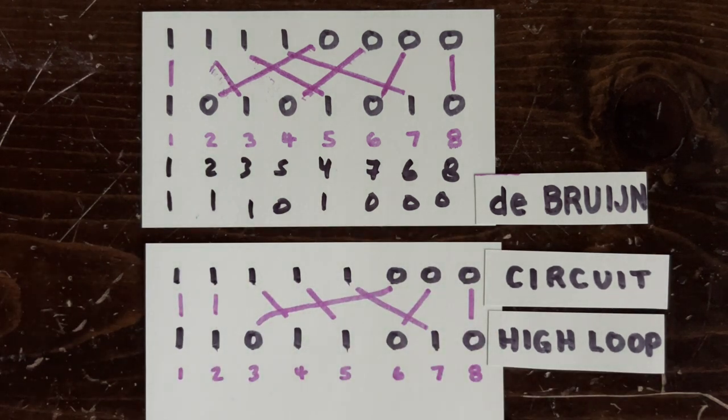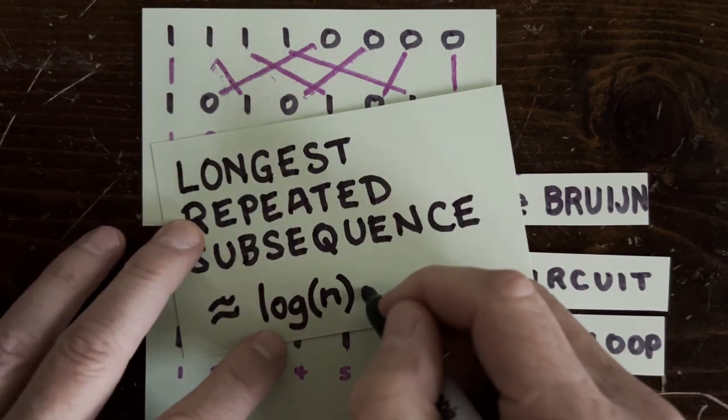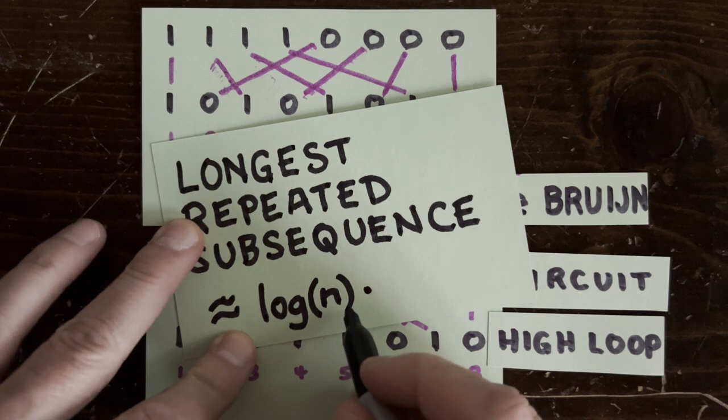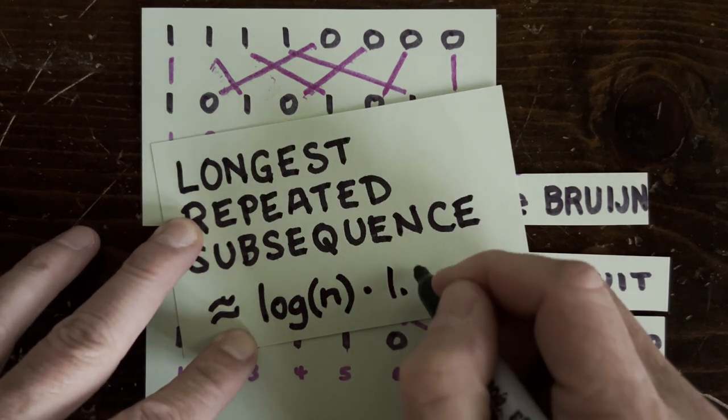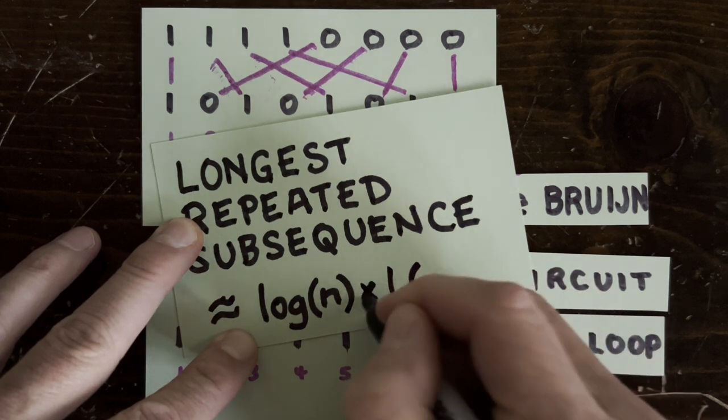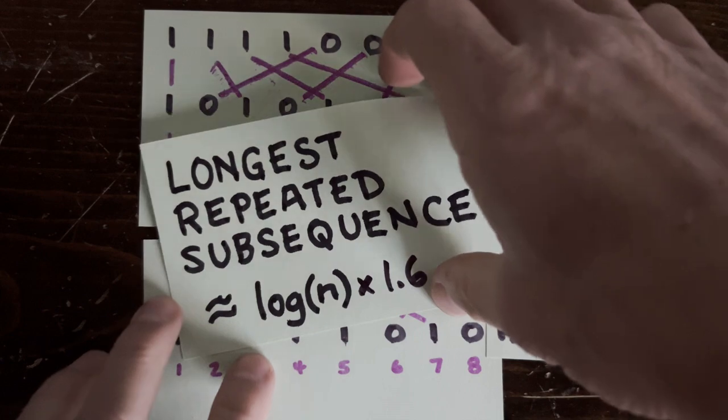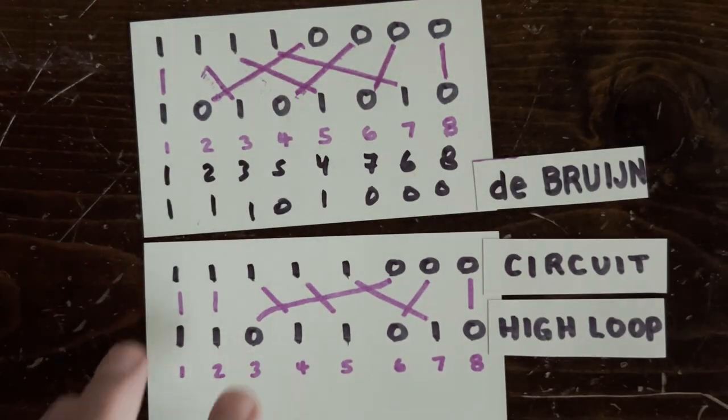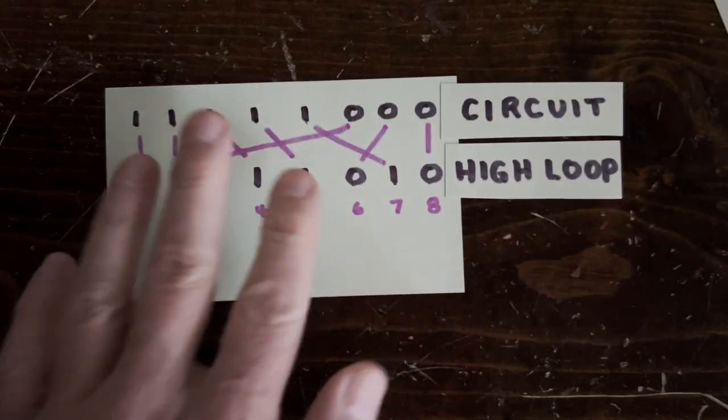And if we do that, empirically, these de Bruijn-like sequences have longest repeated substrings of length log k times log 3, or about 1.6 log k. And once k gets big, it's hard to beat these de Bruijn sequences by sampling random loops. Though the expectation for a random loop is also logarithmic. In any case, the de Bruijn sequence gives us a new challenge.